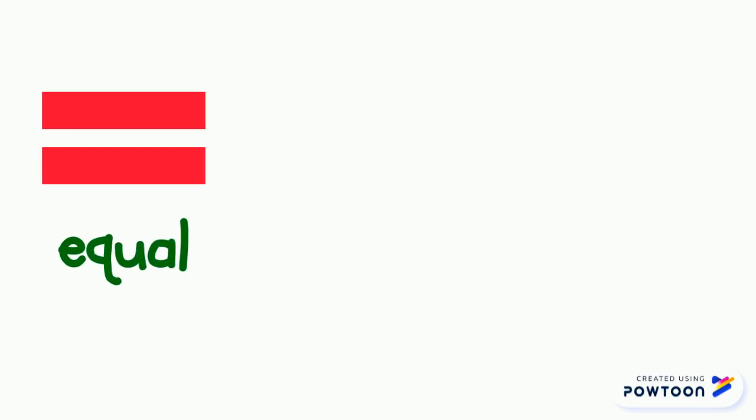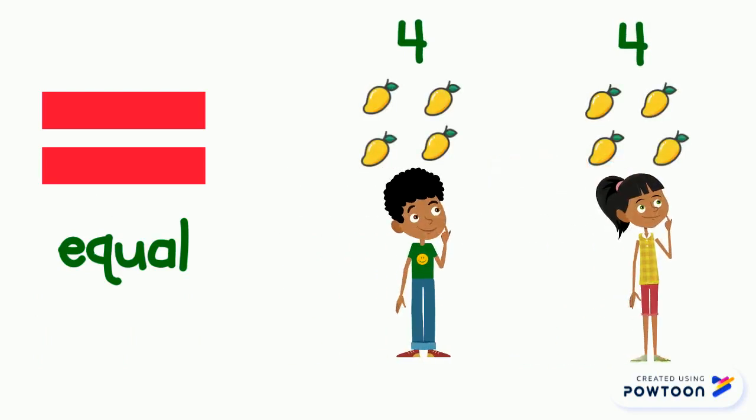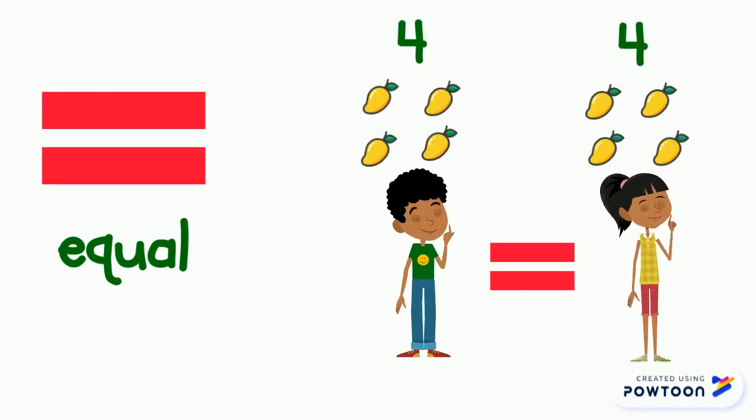This is the equal sign. Equal means the same. Look, John and Mary have the same amount or the same number of mangoes.